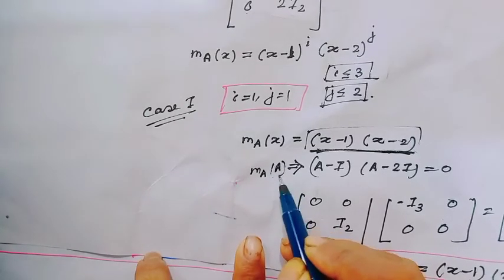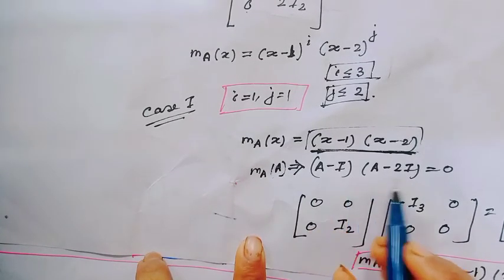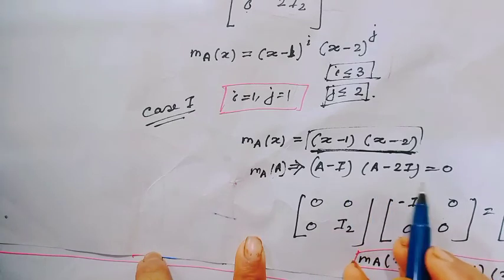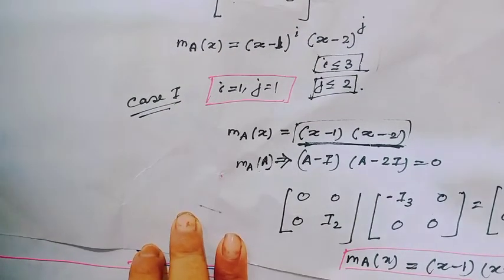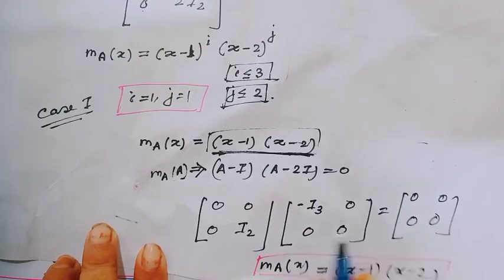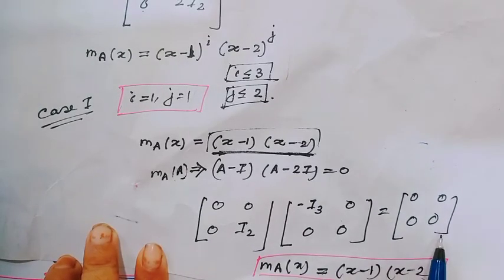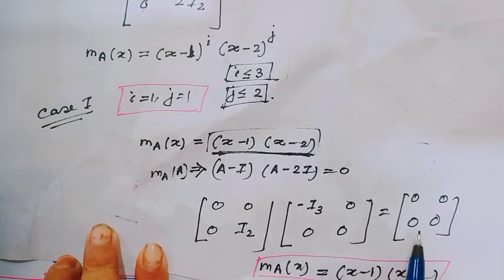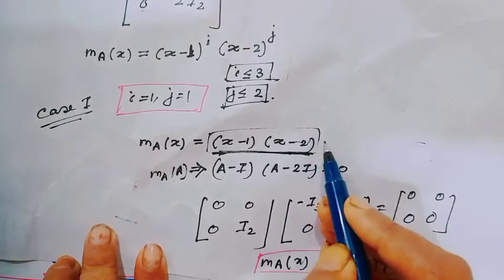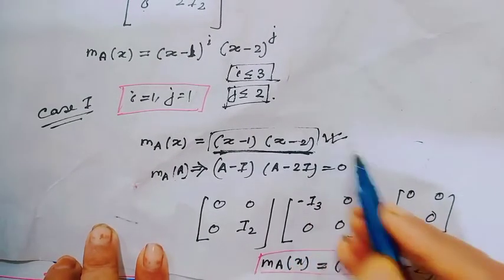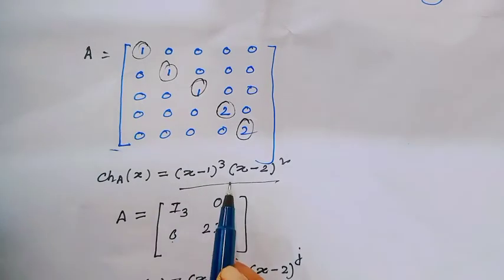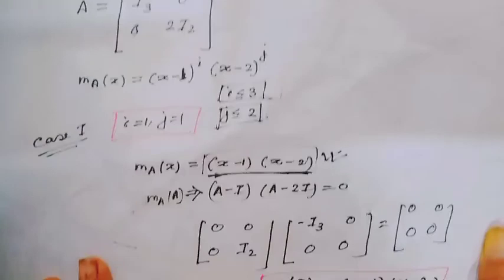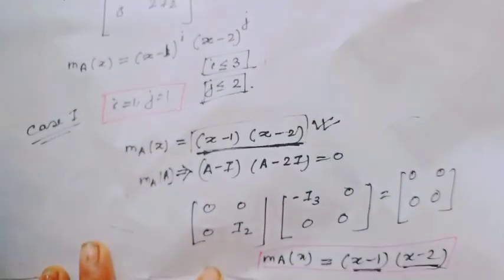For example, consider a 5×5 diagonal block matrix whose diagonal is [I₃, 0; 0, 2I₂], with eigenvalue 1 (multiplicity 3) and eigenvalue 2 (multiplicity 2). The characteristic polynomial is (x−1)³(x−2)². The minimal polynomial of A is (x−1)^i · (x−2)^j where i ≤ 3, j ≤ 2. Testing i=1, j=1: we check whether (A−I)(A−2I) = 0. Since this product equals the zero matrix, the minimal polynomial is (x−1)(x−2).